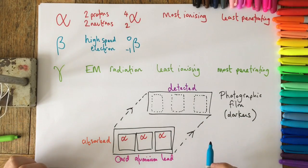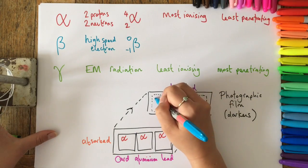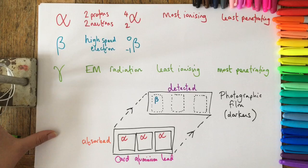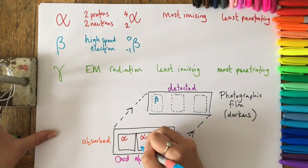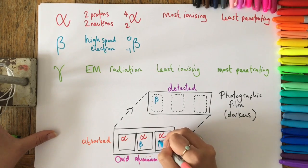Moving on to beta, it's in the middle in terms of penetration properties, so it will go through card and be detected behind it, but it would be absorbed by both aluminum and lead, and so won't be detected behind those windows.